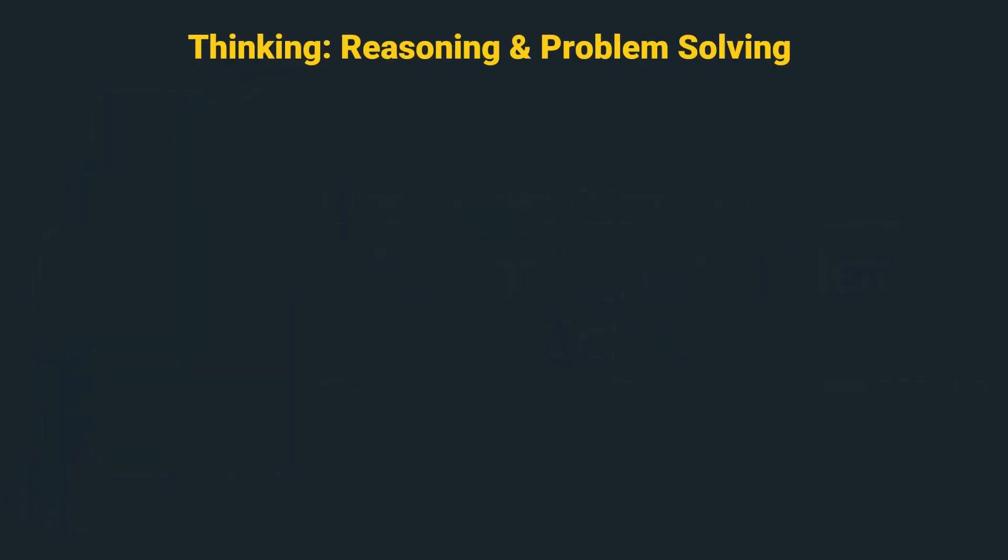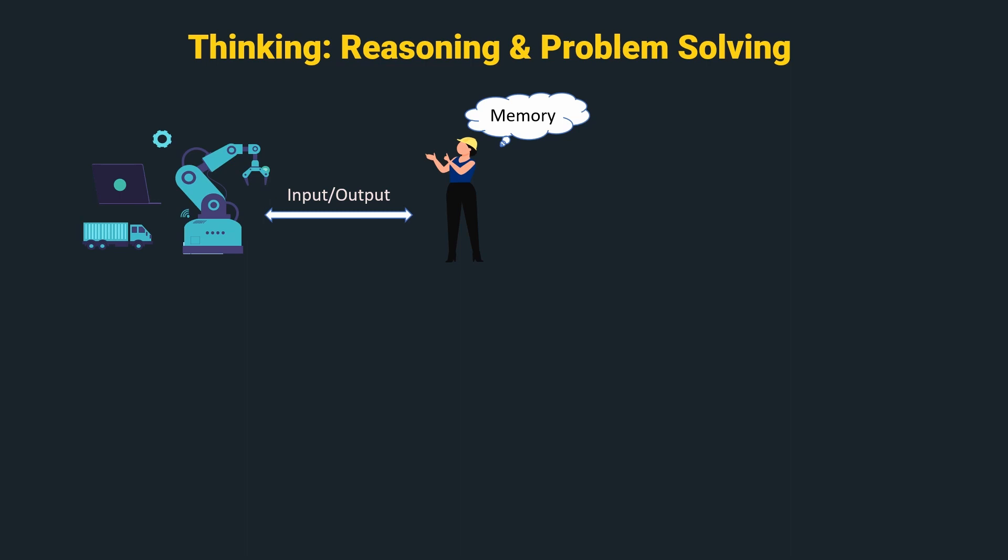In the previous video, we learnt how information finds its way in and out of the human system via input-output channels and how it is stored in the memory. In this video, we are going to learn how humans process this information to reason and solve problems.